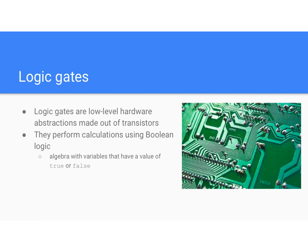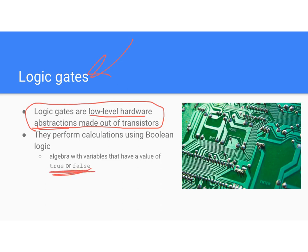Let's go back and talk about logic gates. We went through hardware abstraction and built up to the high level of a computer — now let's go back to some low-level functionality. You do need to know what a logic gate is for this course. A logic gate is a low-level hardware abstraction made out of transistors, and what it does is handle true/false Boolean logic.